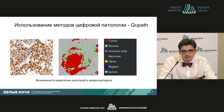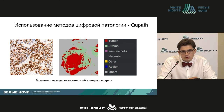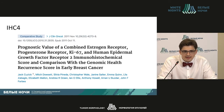QuPath enables us to standardize the process and obtain a quantitative assessment within the tumor, measuring the marker of interest in stroma, immune cells, and other compartments. We can mark tumor, stroma, and artifacts, then select and calculate. This can be done using the cell detection module, which can also be trained to improve accuracy.